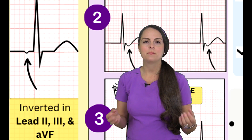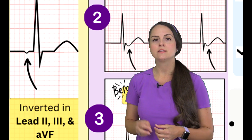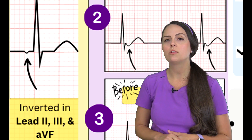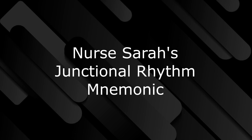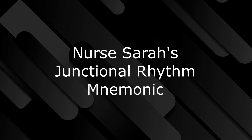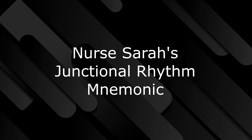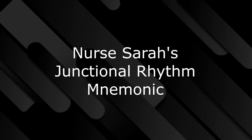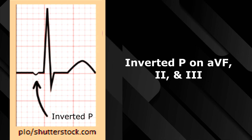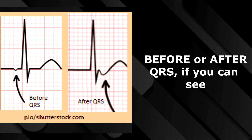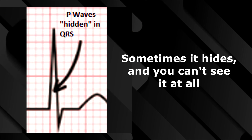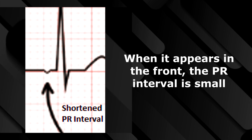When looking at the P wave in leads II, III, and AVF, it will appear upside down. To help you remember the information about that peculiar P wave in this rhythm, here's a little jingle: 'Inverted P on AVF, two and three — before or after QRS, if you can see. Sometimes it hides and you can't see it at all. When it appears in the front, the PR interval is small.'